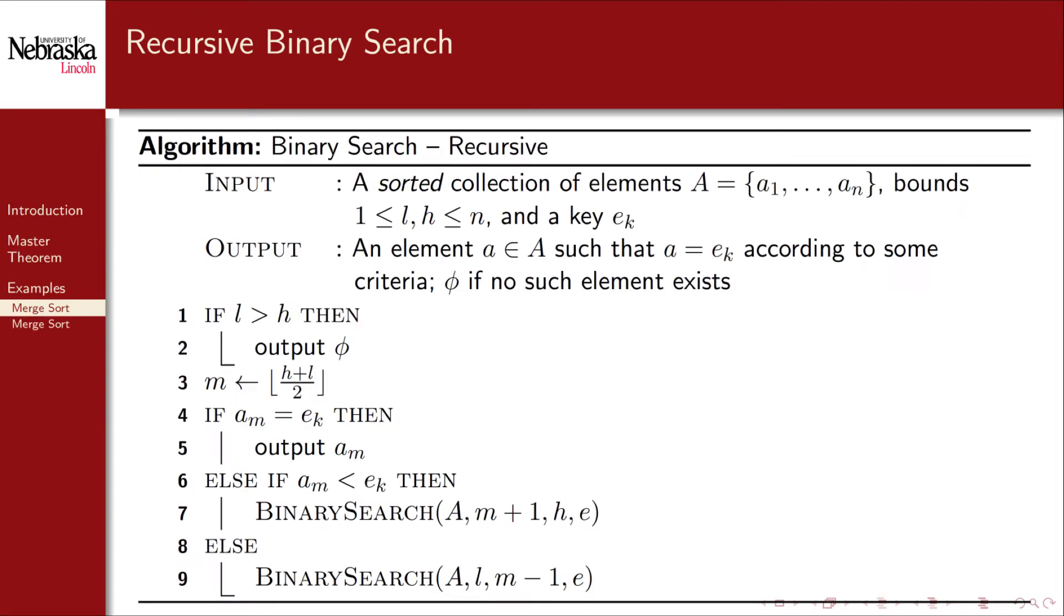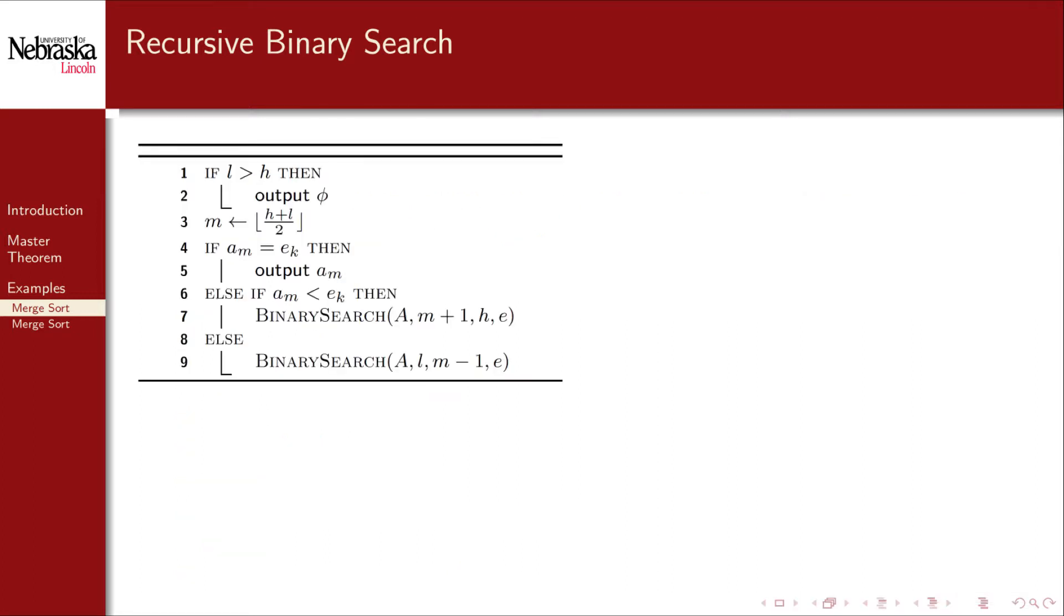The first example is a recursive version of binary search. If you're unfamiliar with this algorithm or don't remember the details, please see another video in the collection or the provided textbook. Our immediate concern will be to analyze this algorithm and apply the master theorem. As a first step, we identify the input size n, the size of the array or collection that we're searching. The elementary operation is the comparison on line 4.